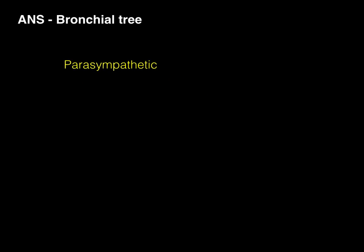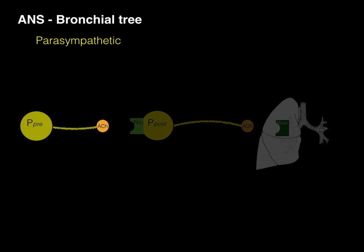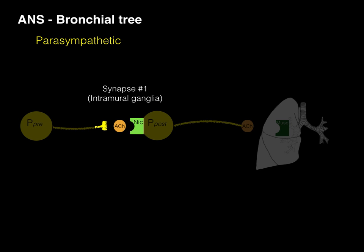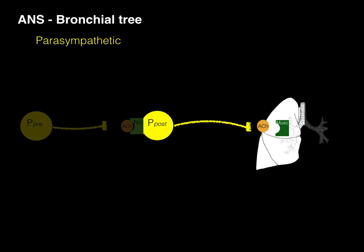Now let's talk about our parasympathetic nervous system. The preganglionic parasympathetic neuron conducts an impulse down to the terminal axon, releasing acetylcholine into that first synapse. This is where the intramural ganglia occur — located right in the walls lining the tracheal tube and bronchial tube. Acetylcholine binds to a cholinergic receptor, specifically a nicotinic receptor, which causes the postganglionic parasympathetic neuron to conduct an impulse all the way down to the terminal axon, releasing acetylcholine into that second synapse.